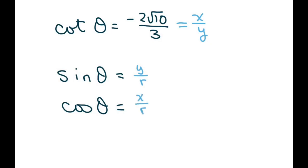So if x is negative and y is positive, that means our angle is in quadrant 2. Alright, so it doesn't really matter because we already have our y is 3 and our x is negative 2 square root of 10. So the only thing we do have to do is find our r.